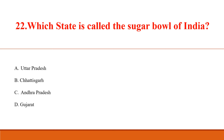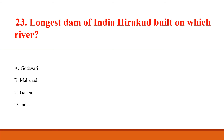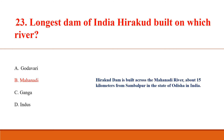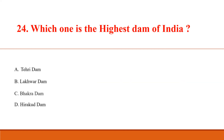Which state is called the sugar bowl of India? Answer A: Uttar Pradesh. Longest dam of India — Hirakud — is built on which river? Answer B: Mahanadi. Hirakud Dam is built across the Mahanadi river, about 15 km from Sambalpur in the state of Odisha. Which one is the highest dam of India? Answer A: Tehri Dam on the Bhagirathi river, Uttarakhand, height 260 meters.